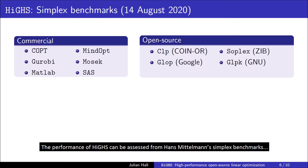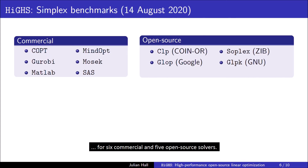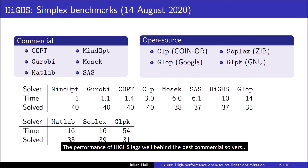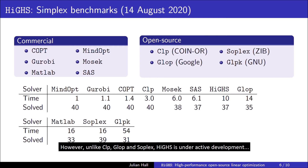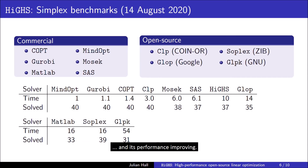The performance of HISE can be assessed from Hans Mittelmann's simplex benchmarks for six commercial and five open source solvers. The performance of HISE lags well behind the best commercial solvers, but it's second to CLP of the open source solvers. However, unlike CLP, GLOP and SOPLEX, HISE is under active development and its performance is improving.